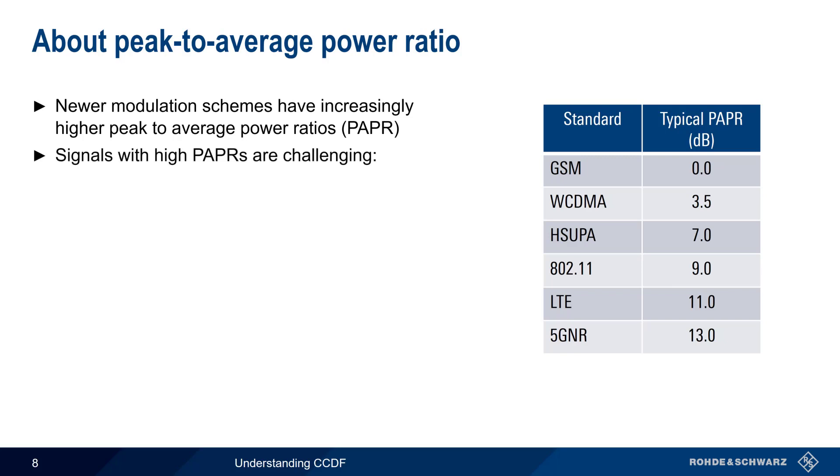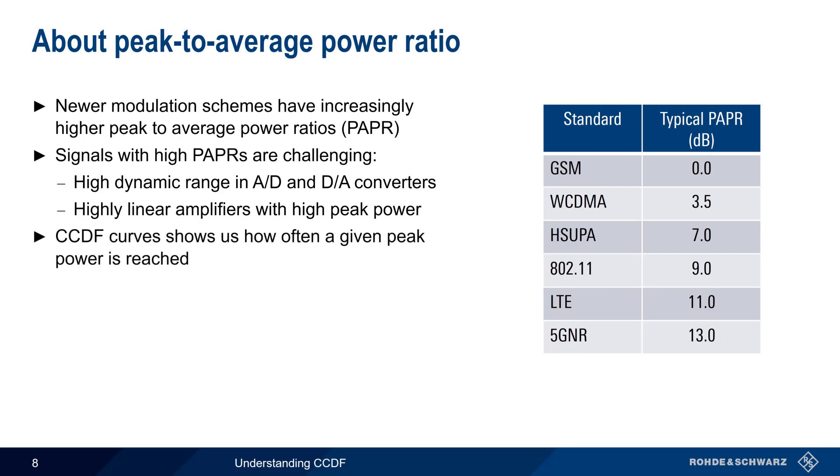This creates non-trivial challenges for device designers, because signals with high peak to average ratios require things like a high dynamic range in analog to digital converters, or highly linear amplifiers with high peak power capability. CCDF, therefore, is an important measurement because it shows us the probability—that is, how often—a signal reaches or exceeds a given peak value. Generally speaking, as the CCDF curve moves towards the right, the signal becomes more stressful or harder for devices to deal with.